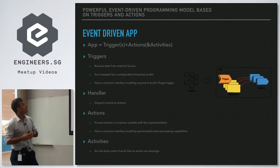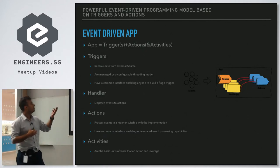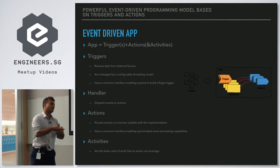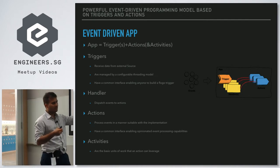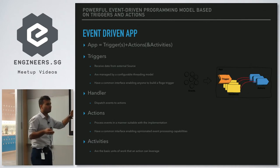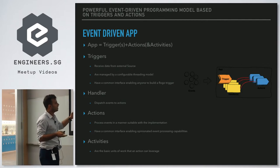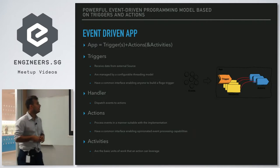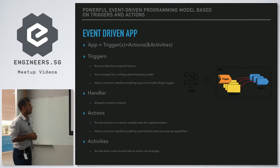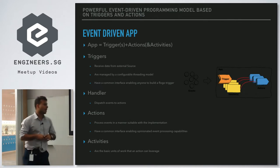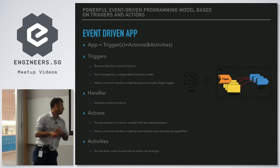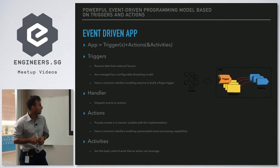FlowGo is called event-driven because it's based on a powerful programming model of triggers and actions. Triggers receive data from external sources and are managed by a configuration-based threading model — you don't have to write threading code, the framework handles it. There's a common interface enabling anyone to build a FlowGo trigger. Handlers dispatch events to actions, which contain your business logic. Activities are the basic units of the framework that an action can leverage.